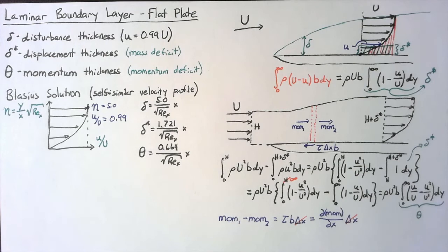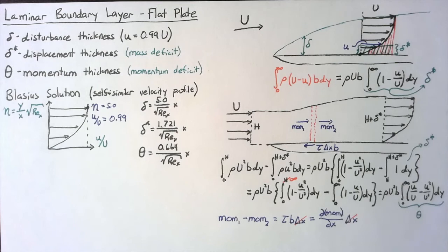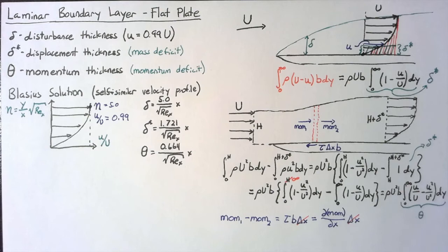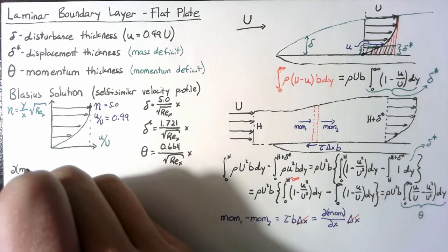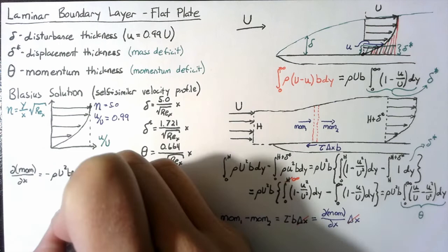What I want to do next is to link the momentum to the momentum deficit. The change in momentum is just going to be the opposite of the change of the momentum deficit. So we can say that the change in momentum is going to be negative rho U² b times theta, and we need to take the derivative of this.